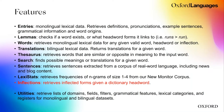We also have a dedicated thesaurus endpoint that retrieves words similar or opposite in meaning, a search endpoint that finds possible meanings or translations for a given word, and various utilities. We can retrieve lists of domains, fields, and filters — features you can use to filter, include, or exclude categories and grammatical features.